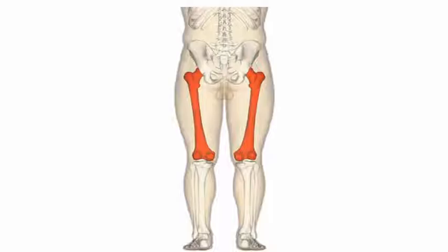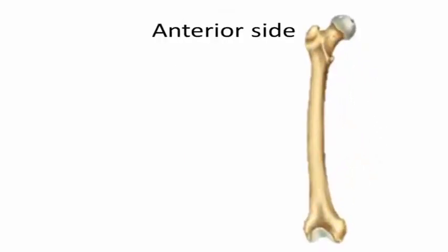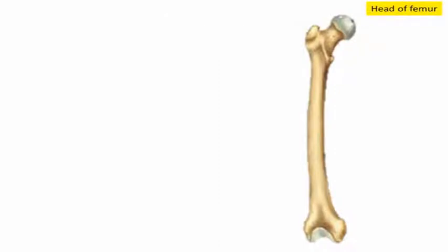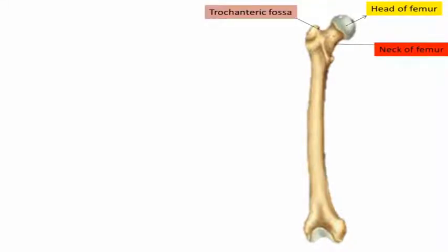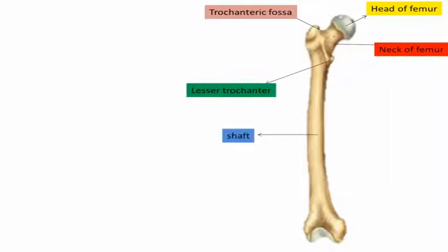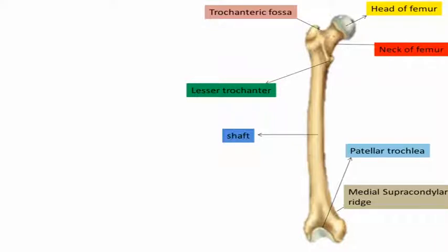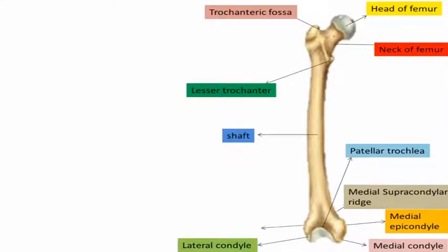Now we will discuss the landmarks of the femur bone. On the anterior side: this is the head of the femur, the neck of the femur, the trochanteric fossa, the lesser trochanter, and this is the shaft. There is the patellar surface, the medial supracondylar ridge, medial epicondyle, medial condyle, lateral condyle, lateral epicondyle, and the lateral supracondylar ridge.